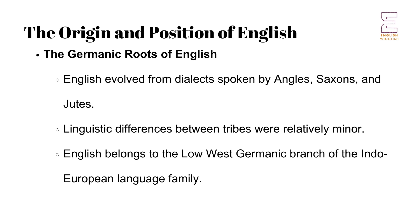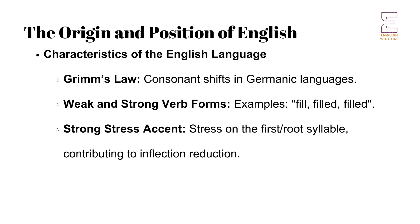The English language as we know it today is the product of the dialects spoken by the Germanic tribes that migrated to England during the early Middle Ages. These tribes included the Angles, Saxons and Jutes. Despite their geographical and political separation over time, the linguistic differences among these groups were relatively minor. English belongs to the Low West Germanic branch of the Indo-European language family, sharing many characteristics with other Germanic languages.